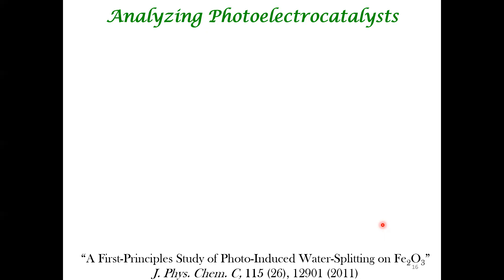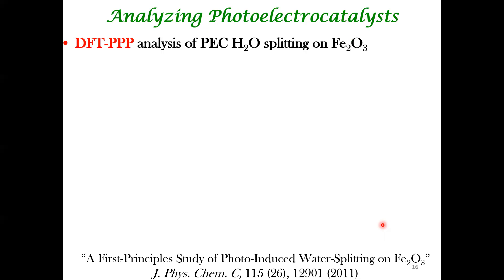Fe₂O₃ is fairly dark brown, so it's a good semiconductor. The minimum potential required is 1.23 V plus overpotential, so anything with a band gap above 1.6–1.7 eV is good for photoelectrochemistry. Fe₂O₃ is therefore a good material for exploring photoelectrochemistry, so we tried to look at the energetics of water splitting in that system.